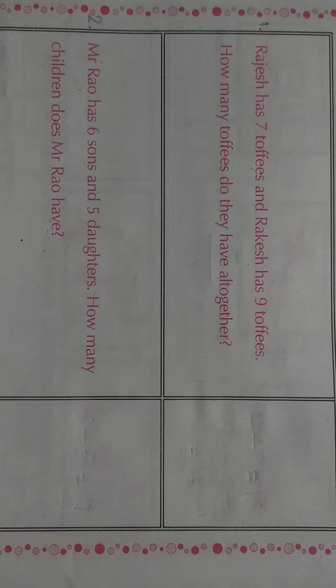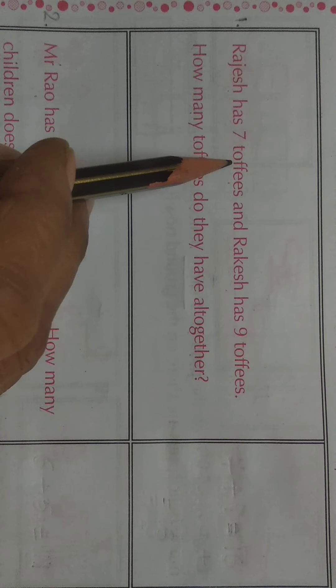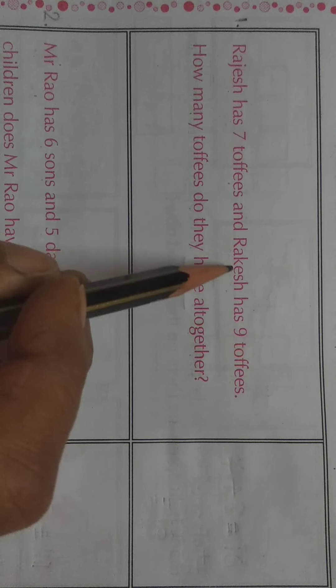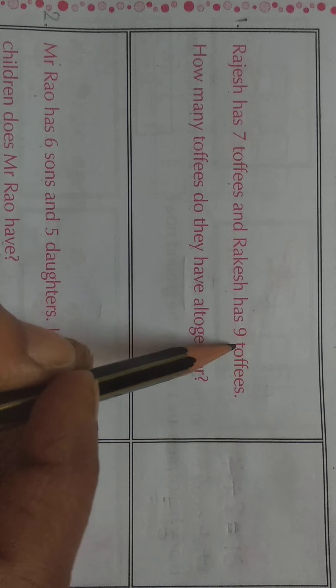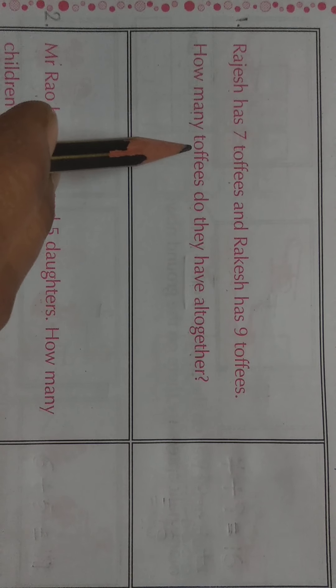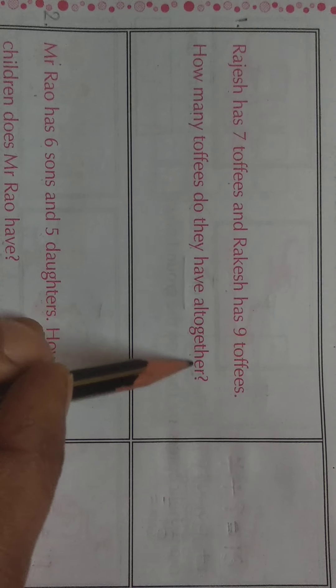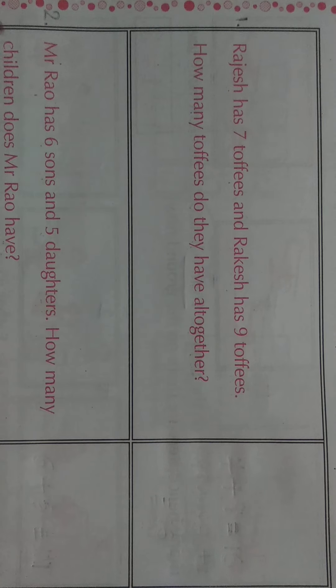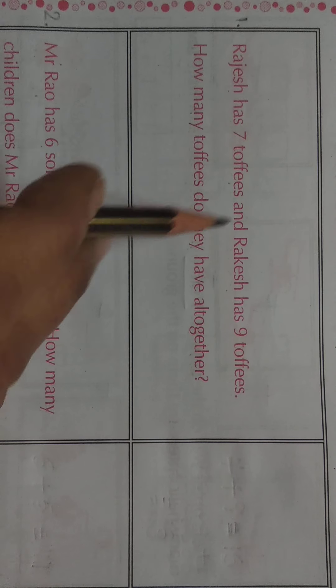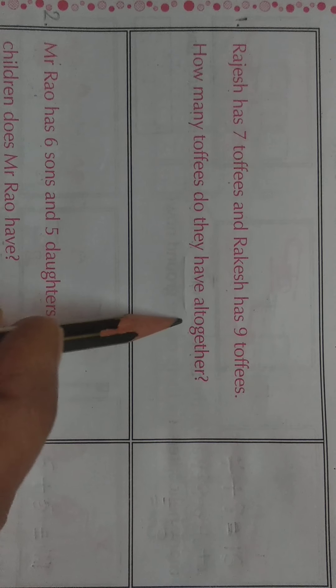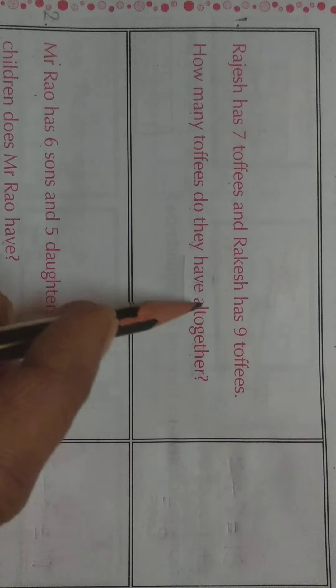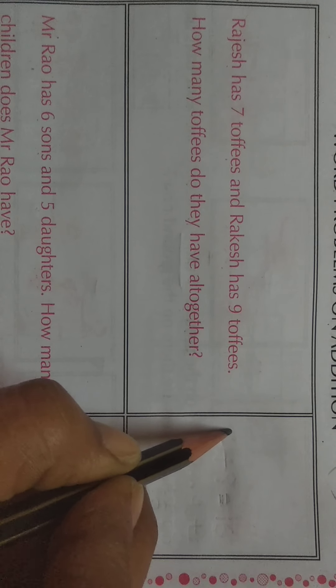First one, let us read the first sum. Rajesh has 7 toffies and Rakesh has 9 toffies. How many toffies do they have altogether? They means Rajesh and Rakesh. Rajesh ke paas 7 toffies hai and Rakesh ke paas 9 toffies hai. How many means kitne toffies hai? Dono ke paas milaker kitne toffies hai? All together means kul milaker.